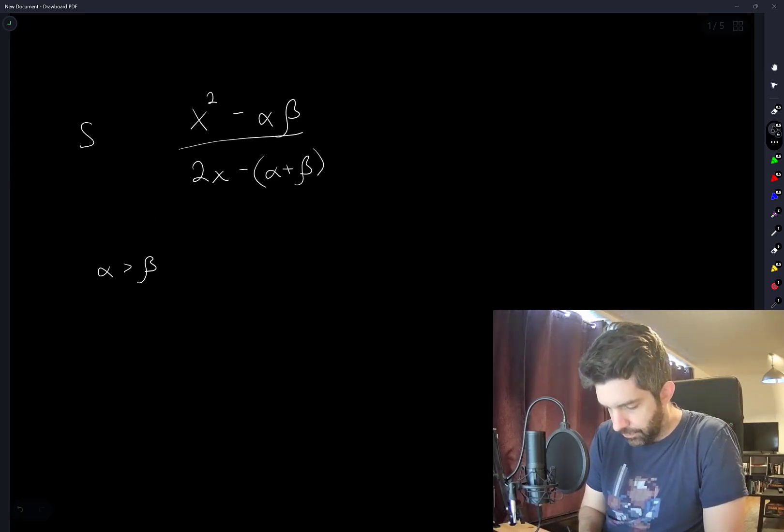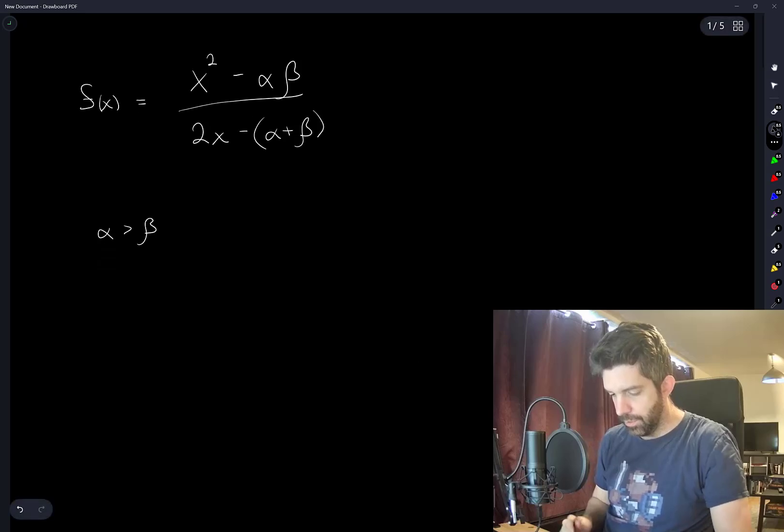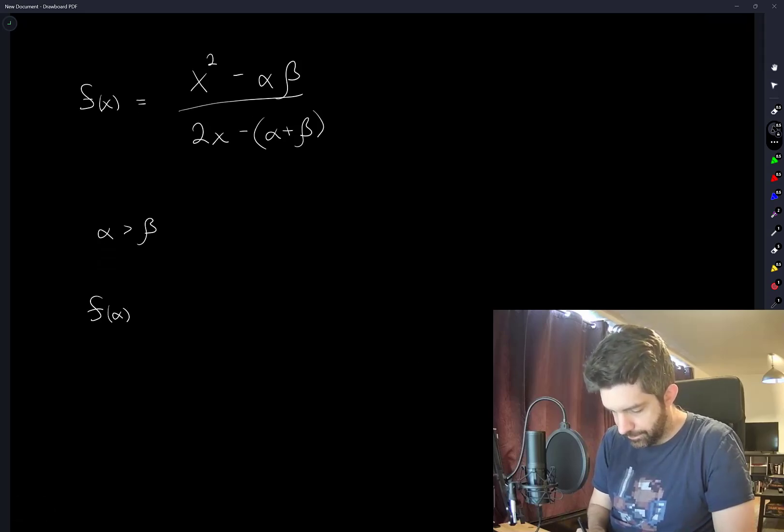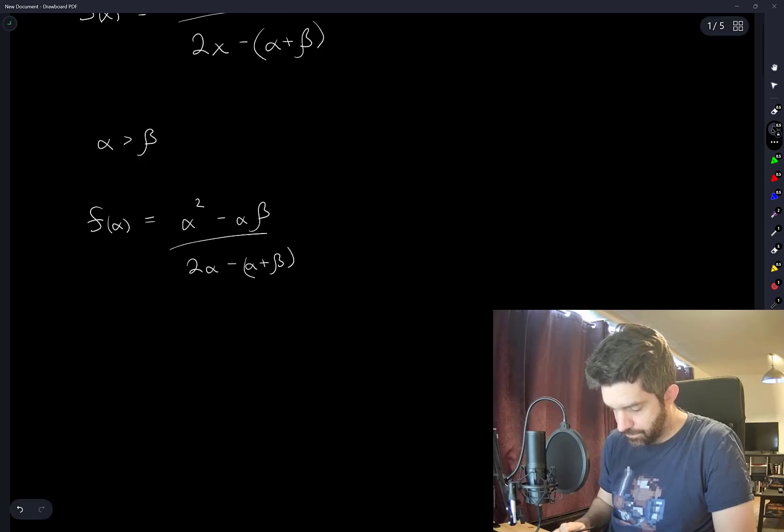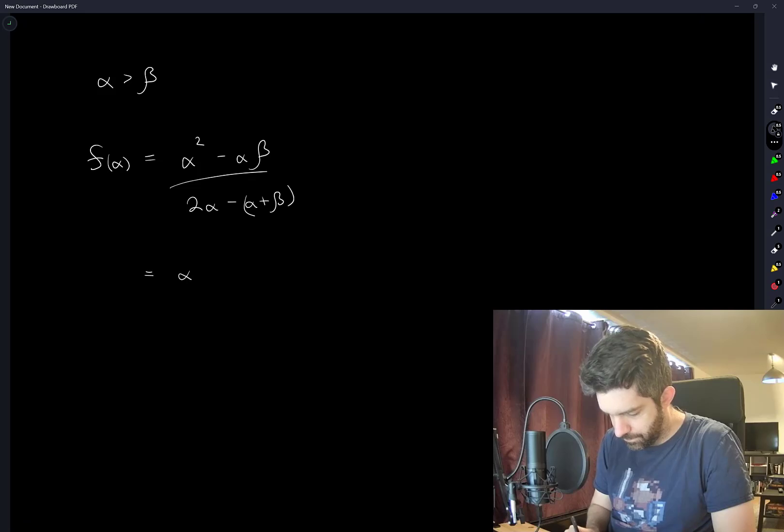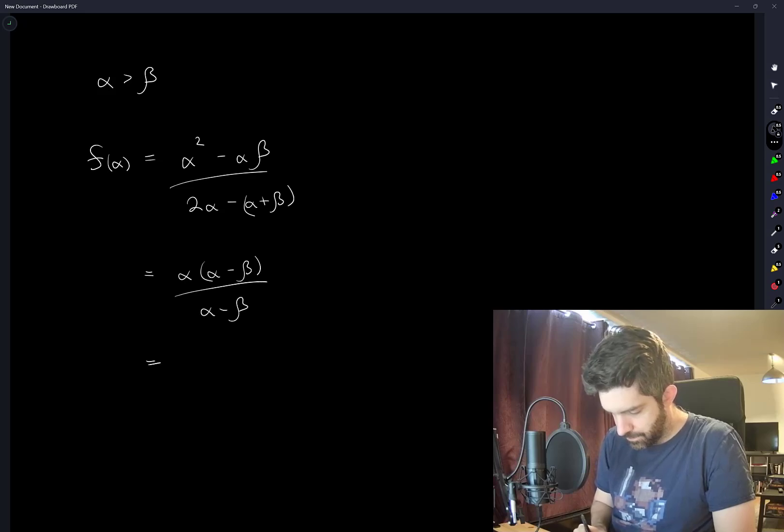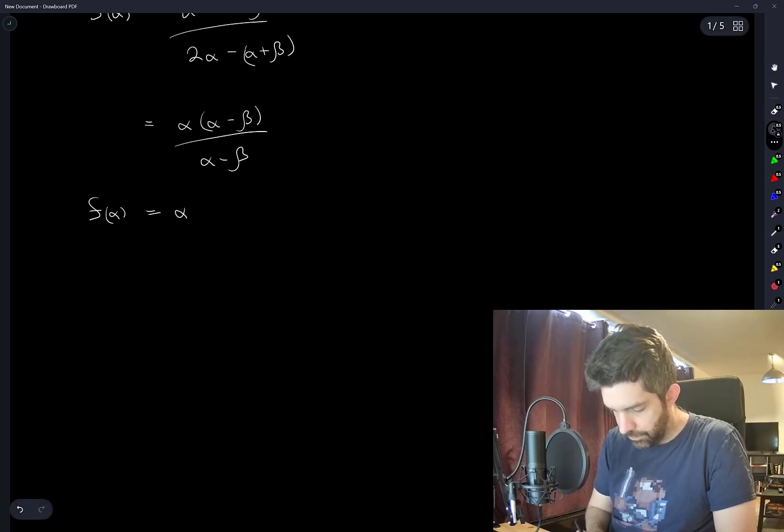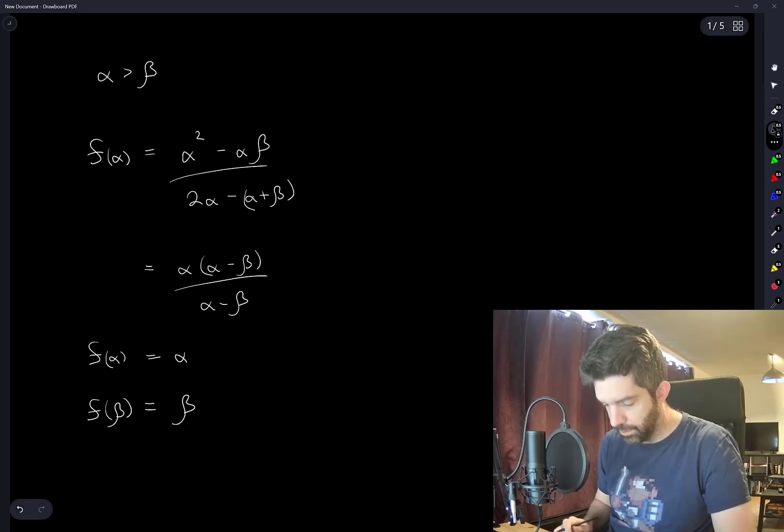Okay, we're going to call this f of x and to get started, I'm curious what f of alpha and f of beta are. Okay, so f of alpha is alpha. This should show that f of beta is also going to be equal to beta.